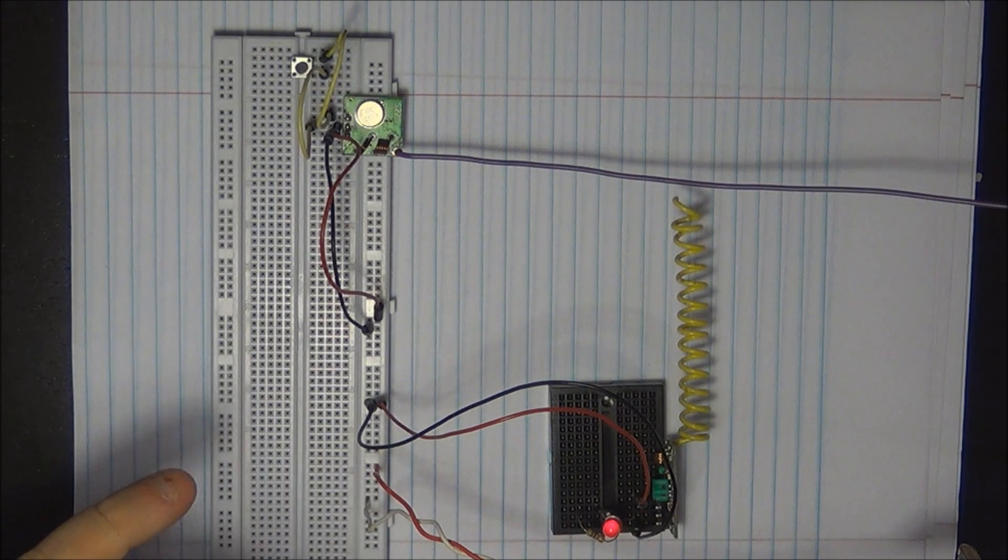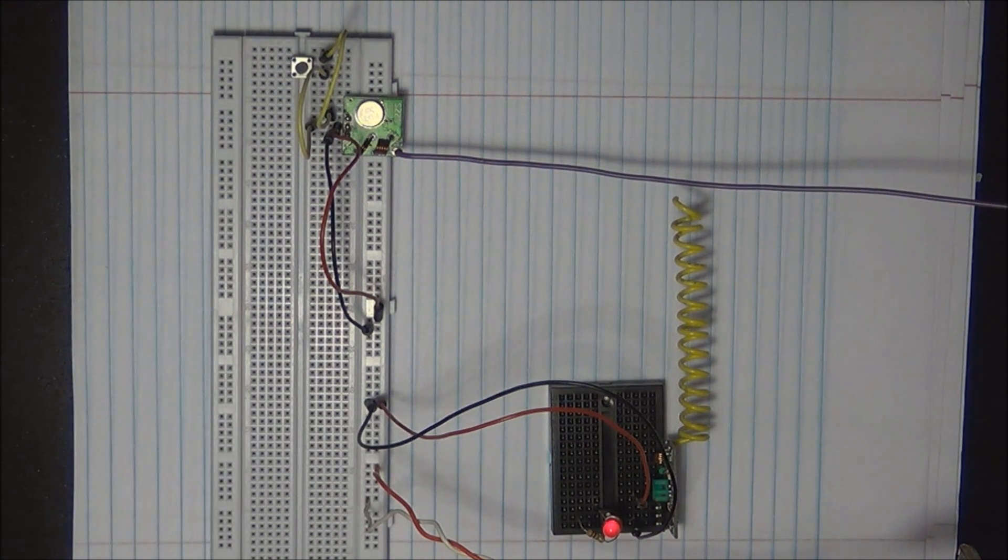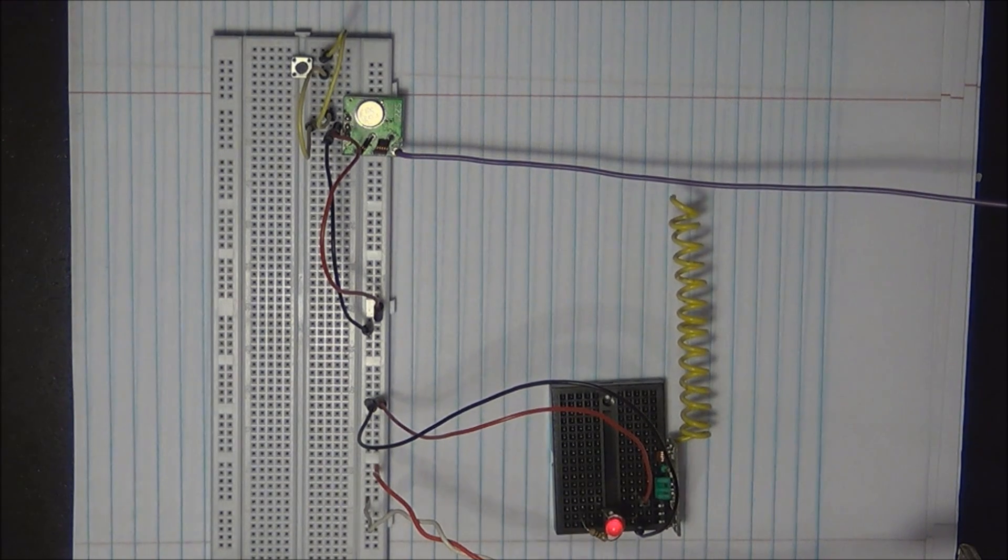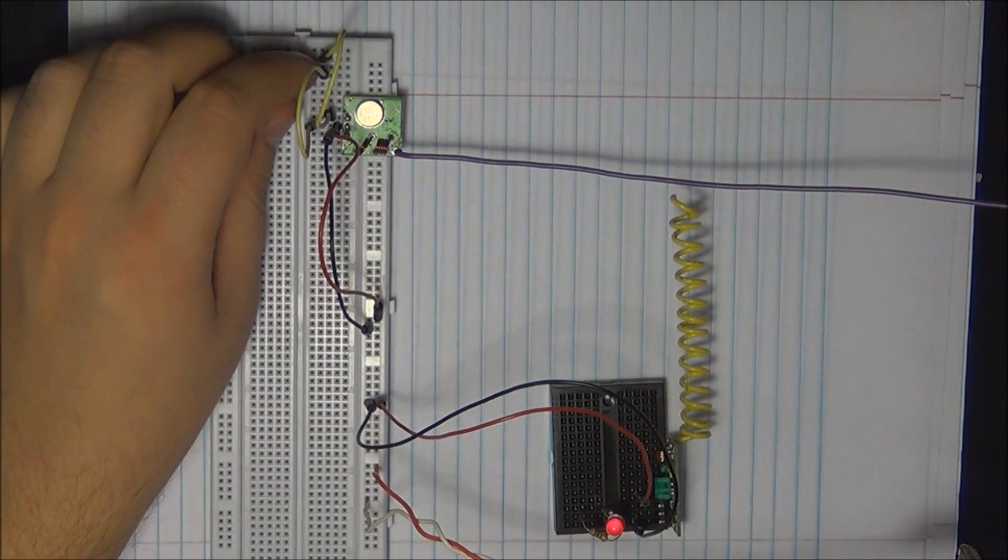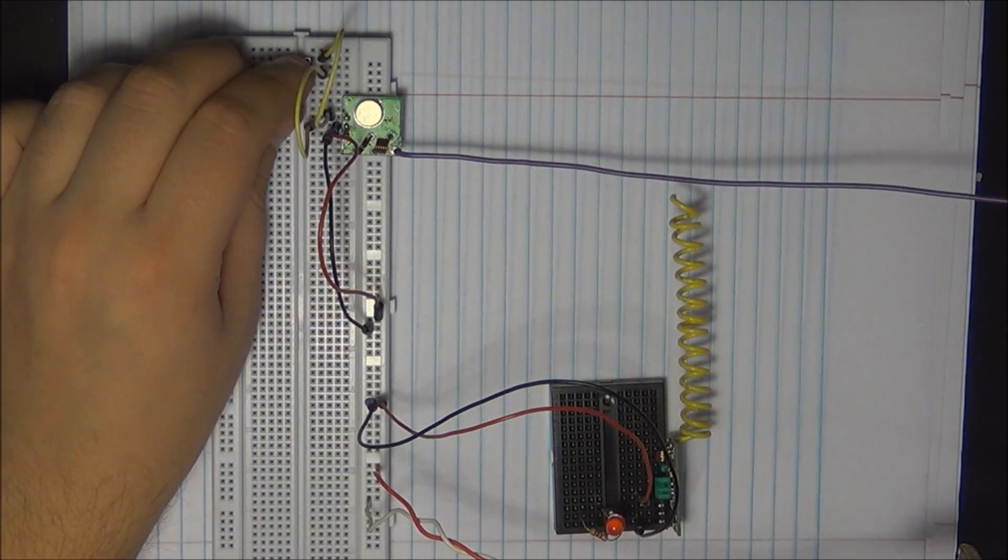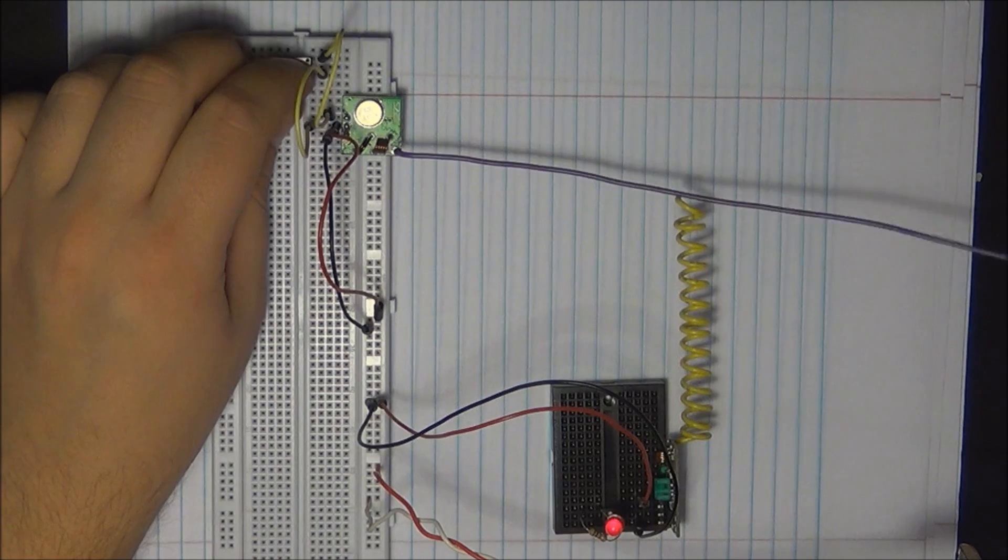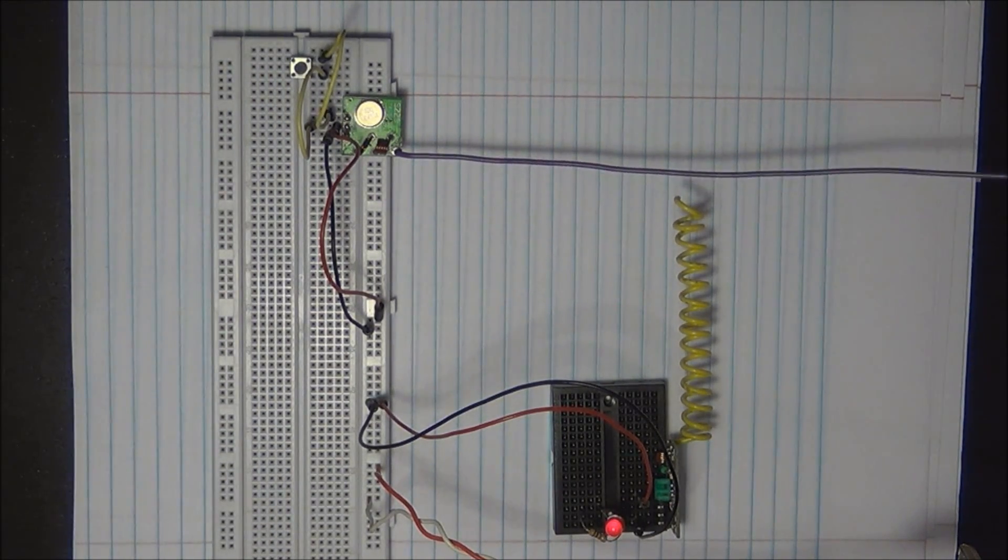So we're going to take a look actually at the Arduino software and we're going to use the serial interface to take a look at what values we're actually getting on that receive bit and how we can counter these false signals that we're not looking to get. So we're going to use some very crude filtering methods through software. So without any further delay let's hook it up to the Arduino and see what we can find.